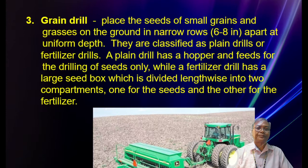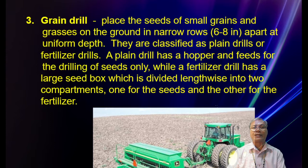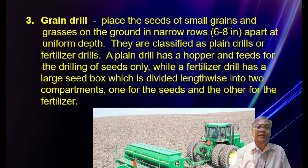The grain drill places seeds of small grains and grasses in the ground in narrow rows, 6 to 8 inches apart, at a uniform depth. They are classified as plain drills or fertilizer drills. A plain drill has a hopper and feeds for seeds only, while a fertilizer drill has a large seed box divided lengthwise into two compartments — one for seeds and one for fertilizer.